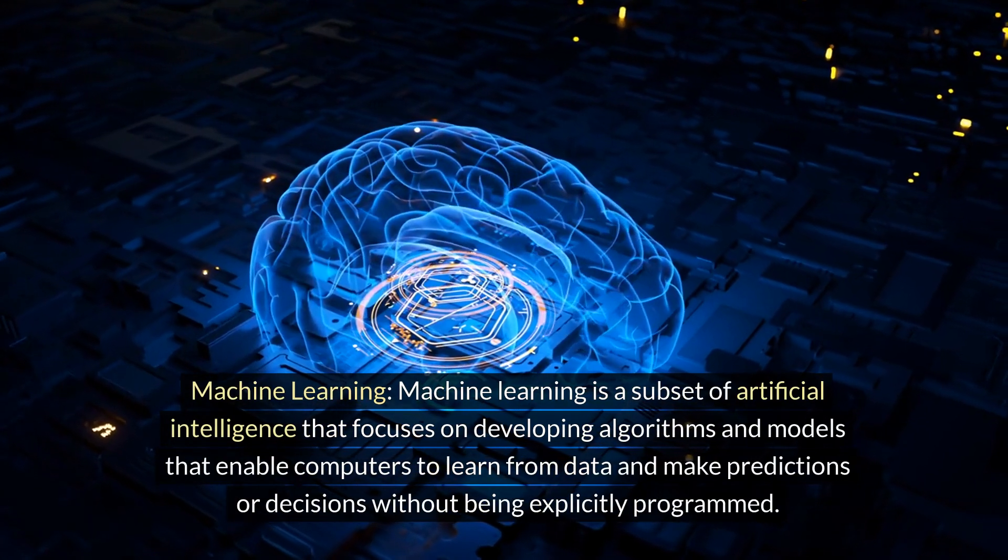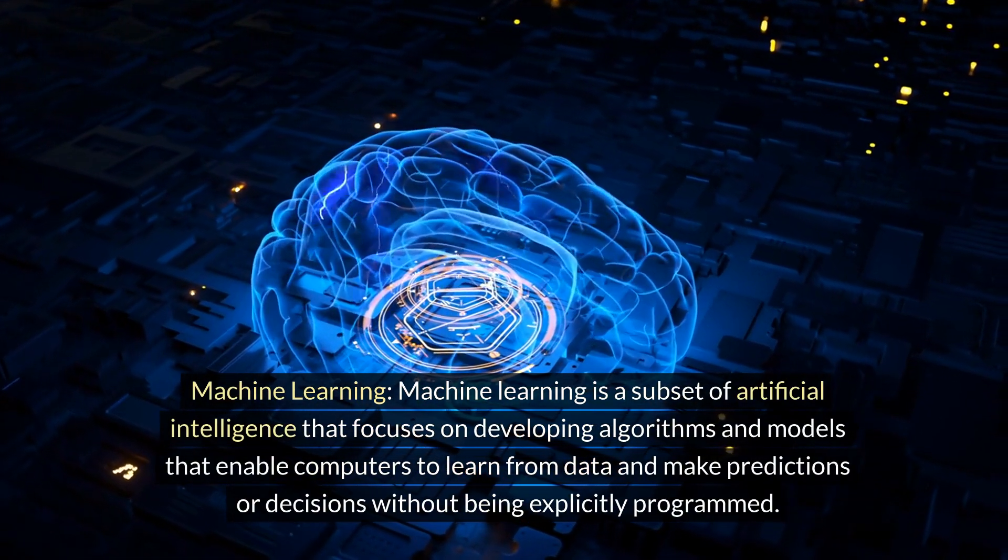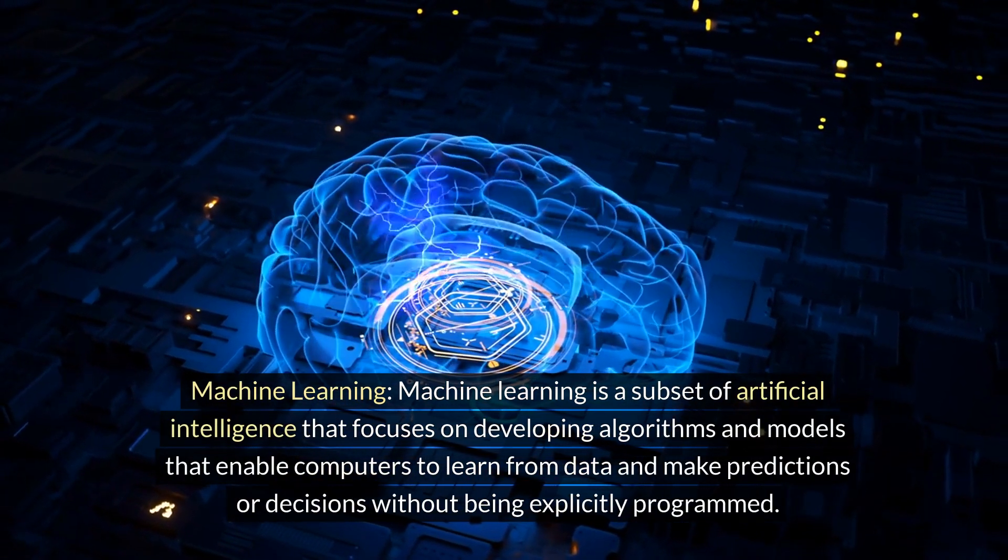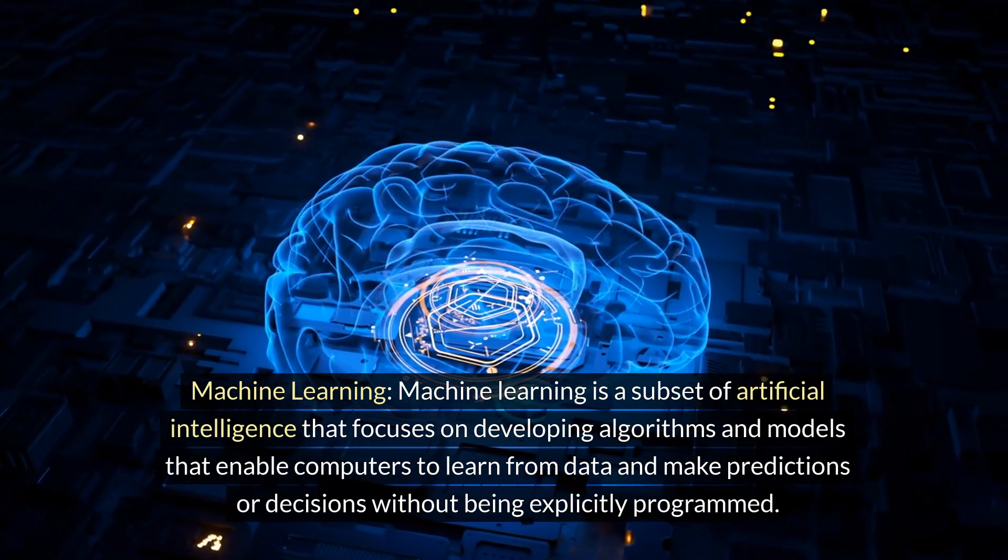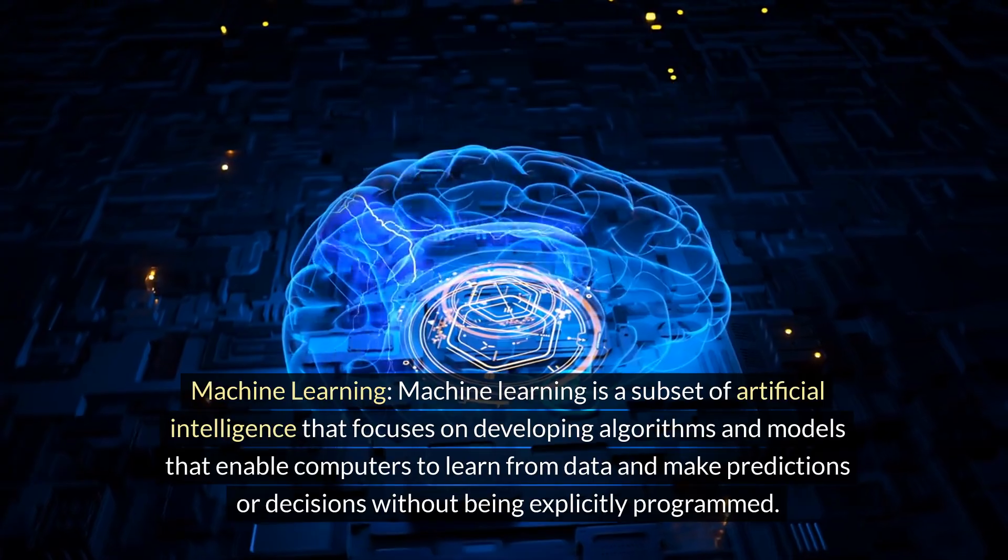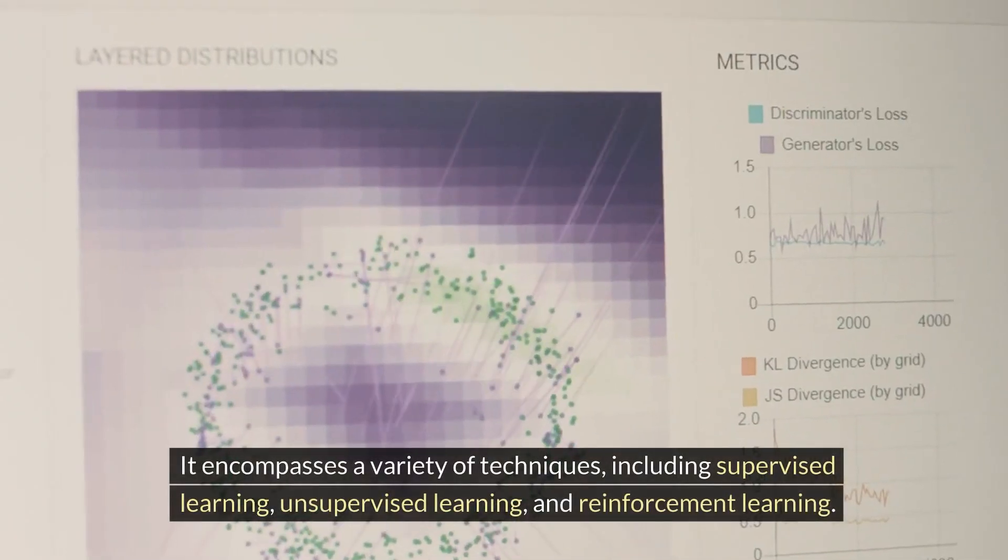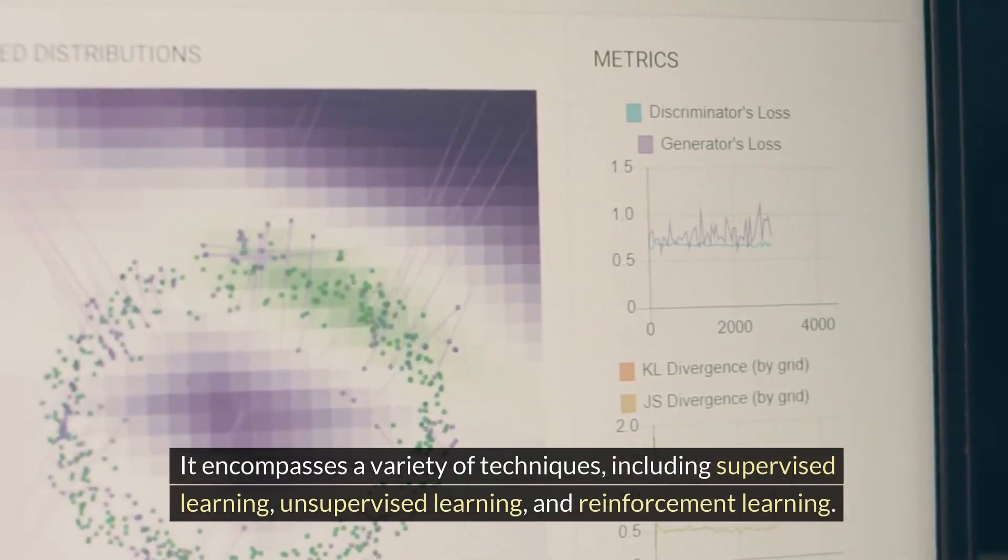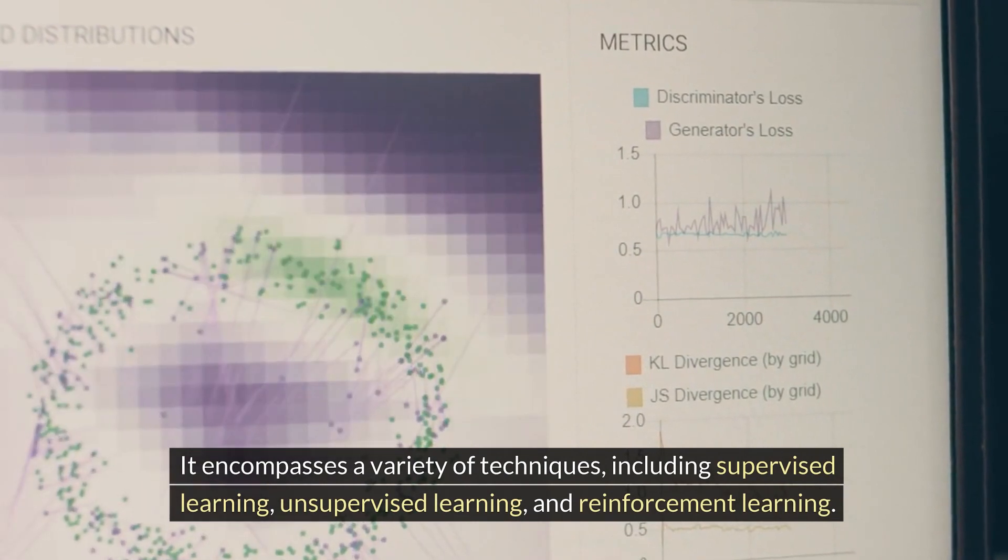Machine learning is a subset of artificial intelligence that focuses on developing algorithms and models that enable computers to learn from data and make predictions or decisions without being explicitly programmed. It encompasses a variety of techniques, including supervised learning, unsupervised learning, and reinforcement learning.